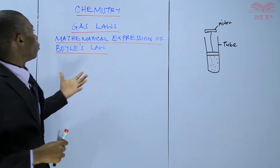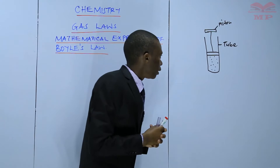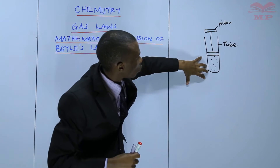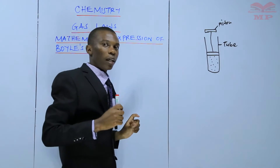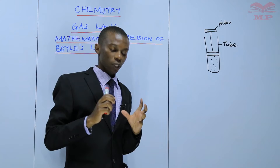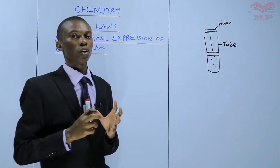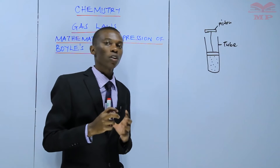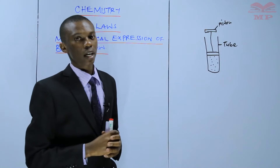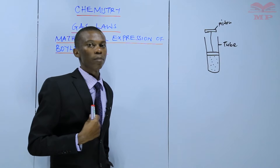Demonstrating Boyle's Law using this simple demonstration: if you press the piston, the volume will decrease. And at the same time, the pressure increases because the particles are now closer to one another, and hence they collide more effectively within themselves and with the walls of the container. That collision is what creates pressure. That is the simple demonstration I gave in the previous lesson.